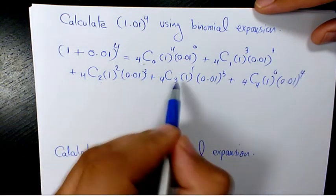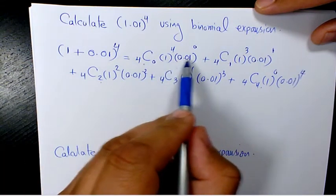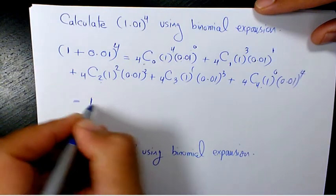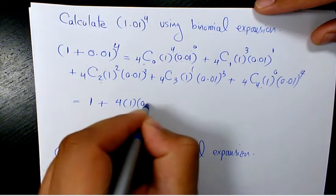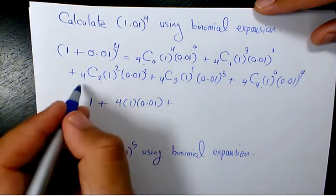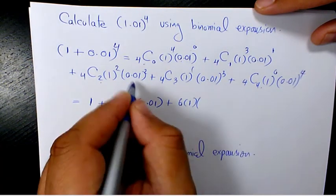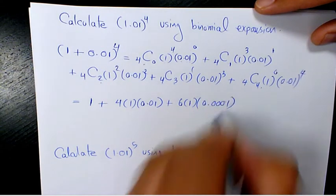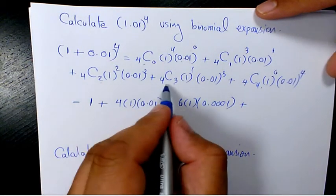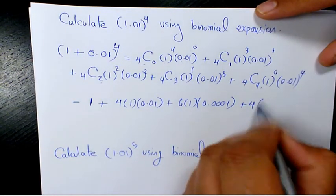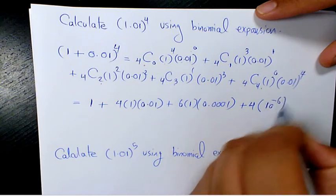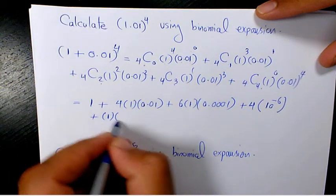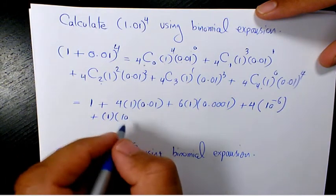The binomial coefficients here are 1, 4, 6, 4, 1. Evaluating: 1 to the power of 4 is 1, so the first term is just 1. Plus 4 times 1 times 0.01. Next is 6 times 1 times 0.01^2, which is 0.0001. Plus 4 times 1 times 10 to the power of negative 6. Plus 1 times 10 to the power of negative 8.